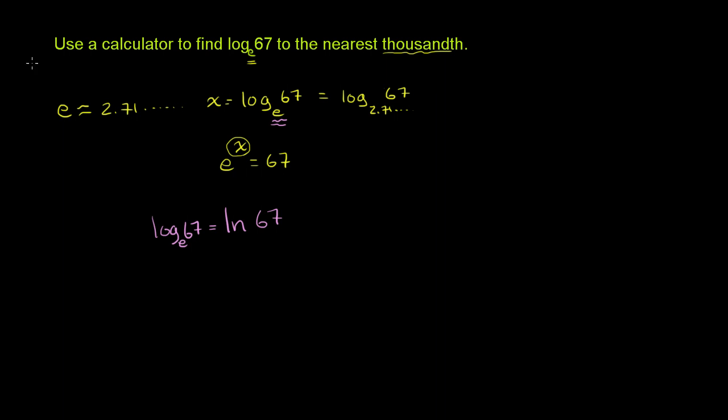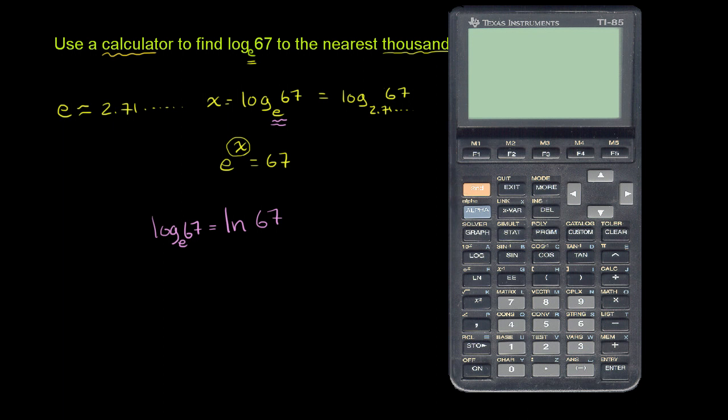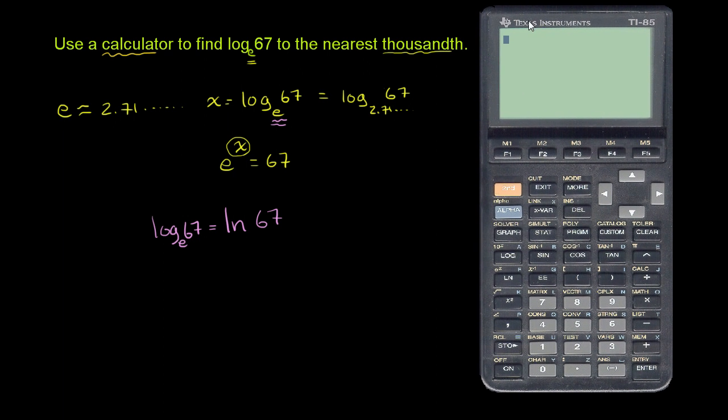Now they let us use a calculator, and that's good, because I don't know off the top of my head what power I have to raise 2.71 and so on and so forth to, to get to 67. So we'll get our calculator out. We get the TI-85 out. Different calculators will have different ways of doing it. If you have a graphing calculator like this, you can literally type in the statement natural log of 67 and then evaluate it.